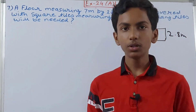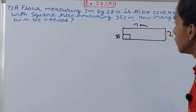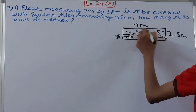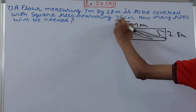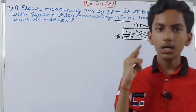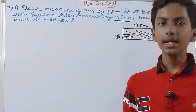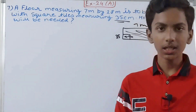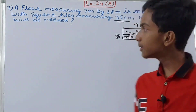We have to find the number of tiles that can be put on the floor. For that, we need to know the entire area of the floor and the area of one tile. So we have two things to calculate: area of the floor and area of the tile. After that, we will divide area of the floor by area of one tile, and using this method we will be able to find the number of tiles required.